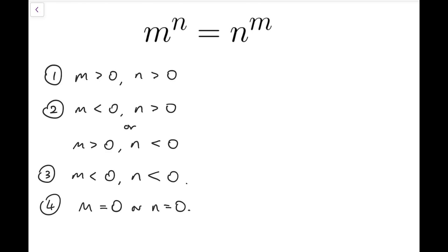I'm going to divide the problem into four cases according to whether m and n are positive, negative, or zero. The first case is that m and n are both positive, the second case is that one of them is positive while the other is negative, the third case is that both m and n are negative, while the fourth case is that either one of them is zero. I'm going to discuss cases two to four before going back to one, because cases two to four are actually relatively easier.